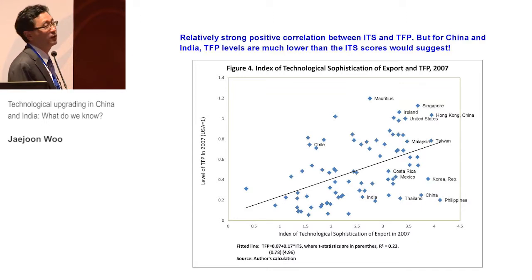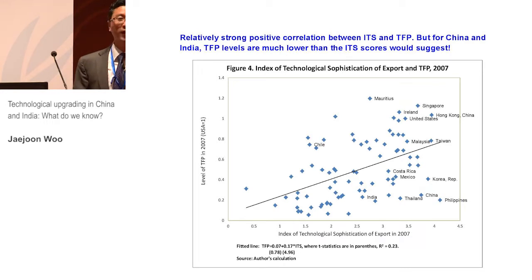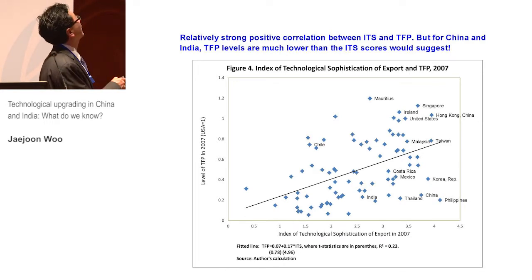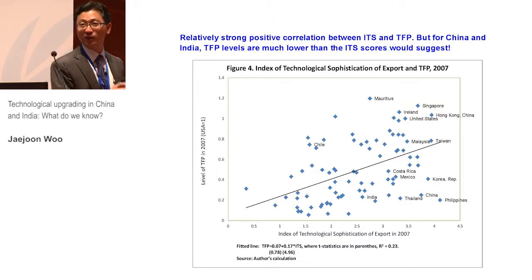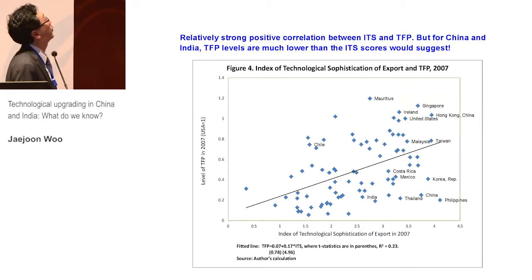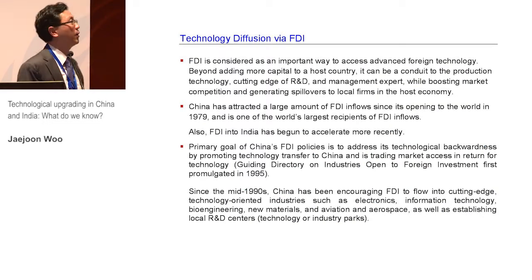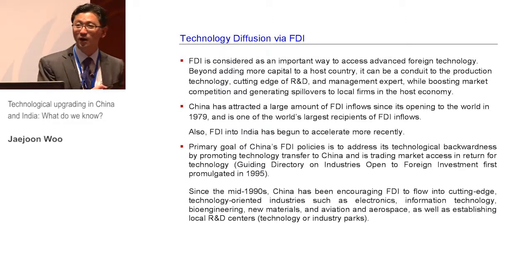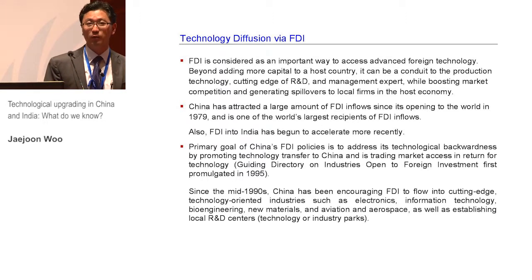For example, for China, if you take at face value what they export, a simple OLS would suggest that TFP level should be approaching 70% of the US — but it is only about 25% in the year 2007. So apparently there is some gap, and we'll come back to that when discussing international production networks. Since we're talking about measurement of technological upgrading, let's talk about some individual channels. FDI is one of the main channels of technological progress.